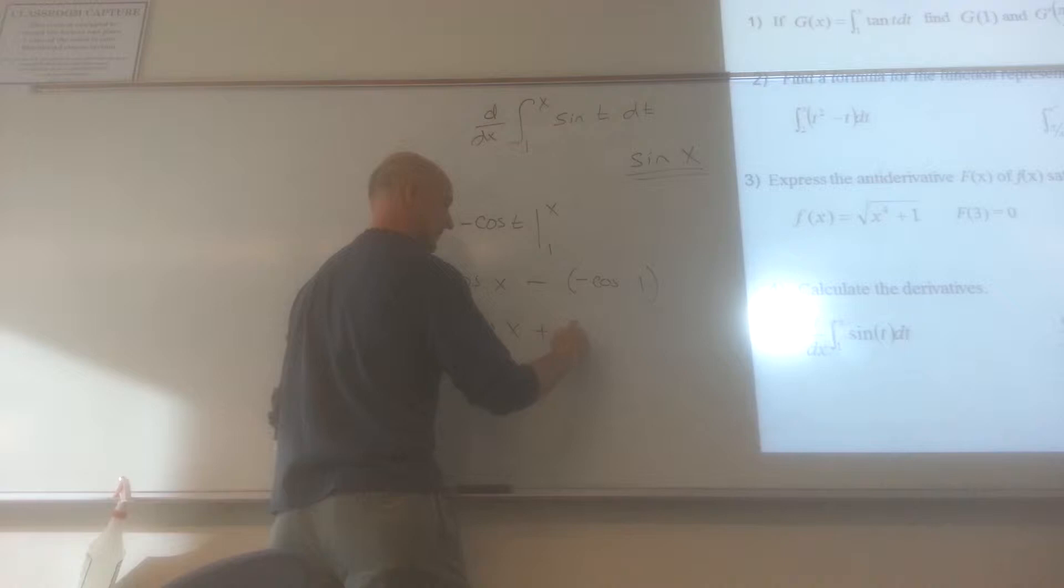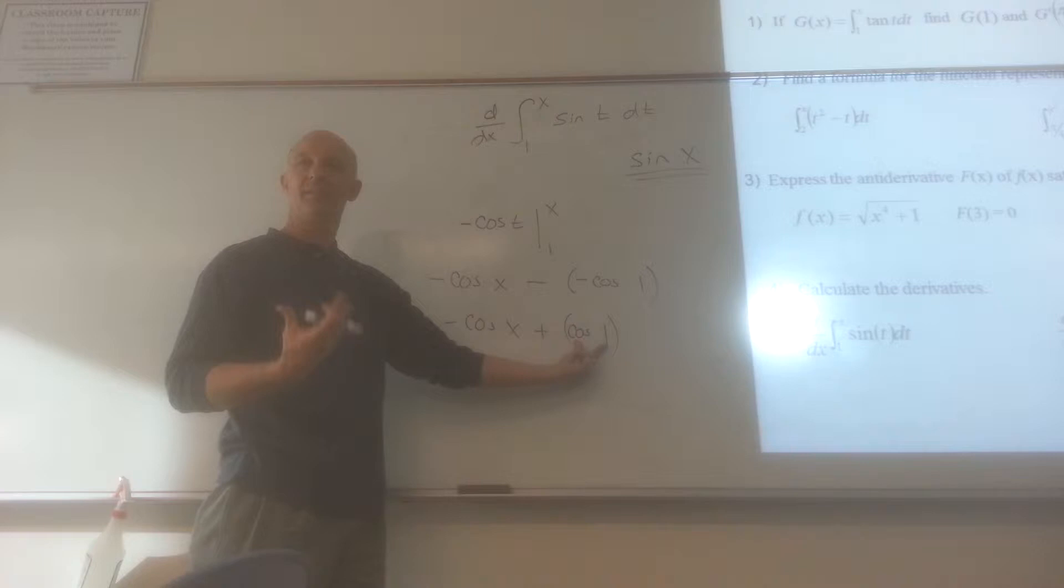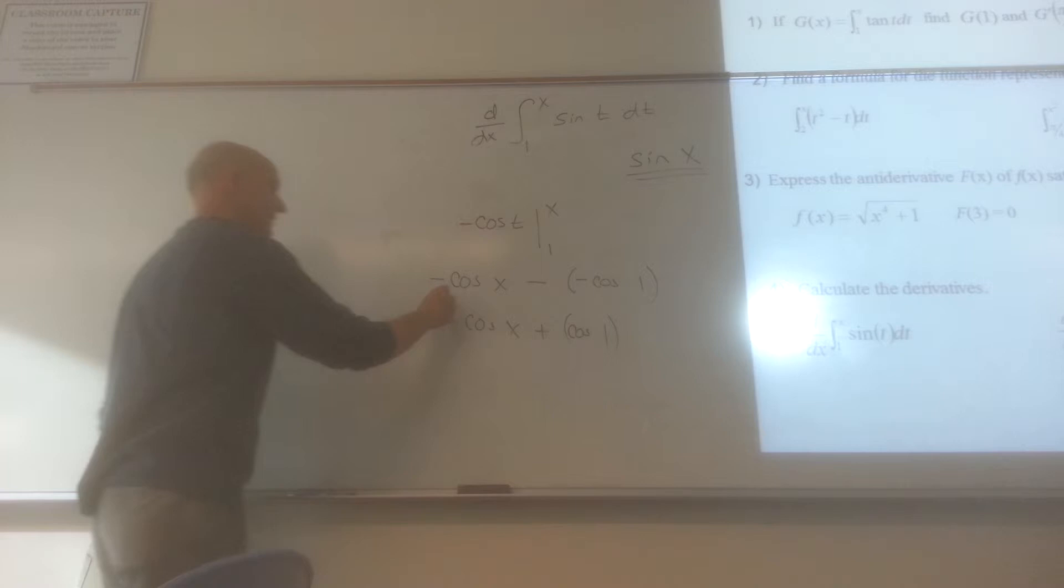Now the cosine of 1, isn't that just going to be a constant? Isn't that just a number? Cosine of 1 is just some value.